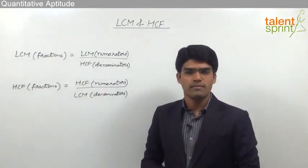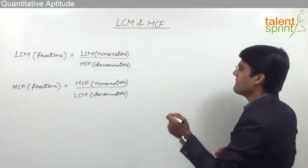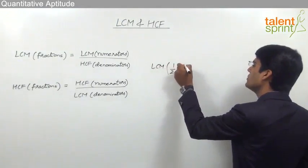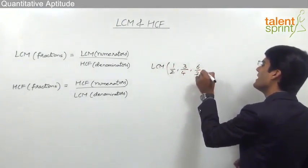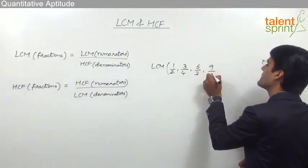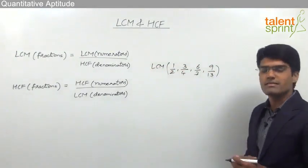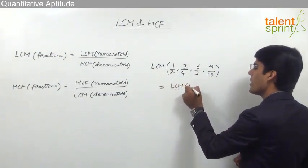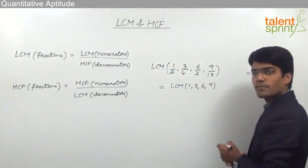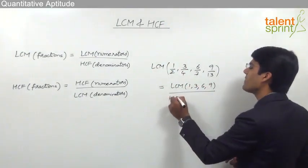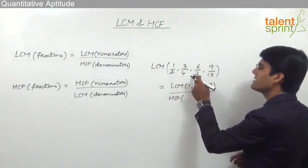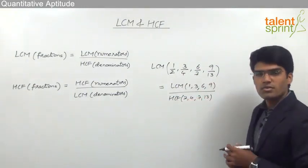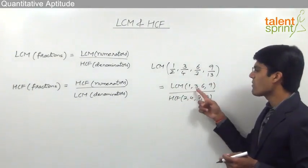Let us take an example to understand this. Let's say we have to find the LCM of the fractions 1/2, 3/4, 6/7, and 9/30. As discussed, LCM of fractions is LCM of the numerators — that is, LCM of 1, 3, 6, and 9 — divided by HCF of all the denominators: 2, 4, 7, and 30.